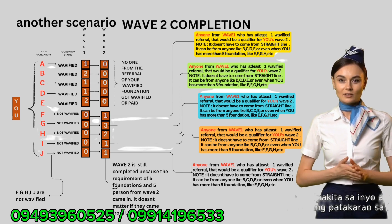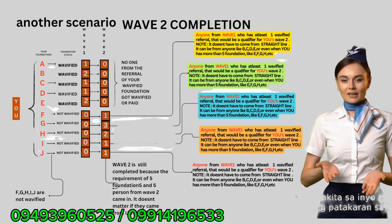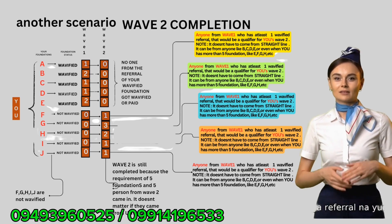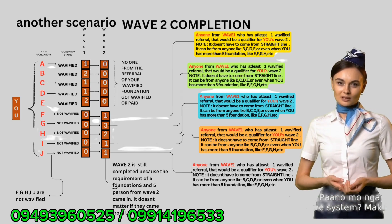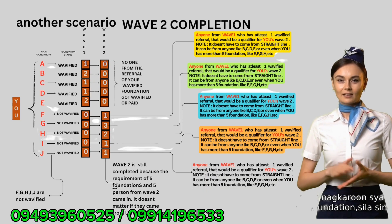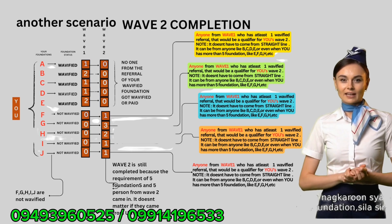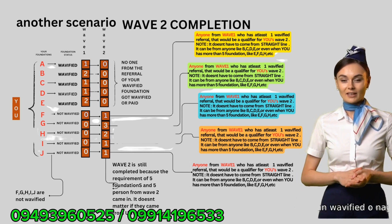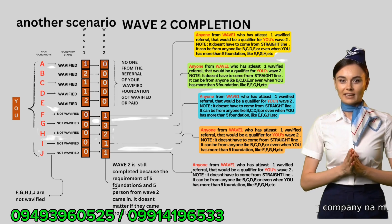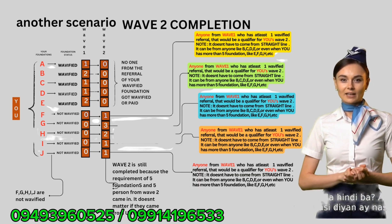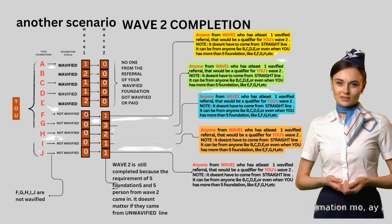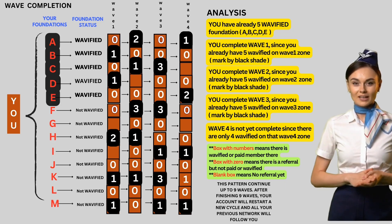Bago natin ipagpatuloy ang discussion tungkol sa wave three, gusto ko muna ipakita ang isa pang magandang patakaran sa nine waves. Sa larawan ay makikita na ang five foundations ay nagkaroon ng five referrals ngunit ang mga referral na yun ay natulog lang at hindi na kumilos. Nagkaroon siya ng pandagdag na foundation — sina FGHIJ — at sa kanila nagmula yung mga bumuo ng wave two. Si FGHIJ ay hindi naman waveified o nagpa-activate, pero allowed pa din ng company na mula doon makabuo ng wave. Ang importante lang ay nasunod ang basic rule na may five kang activated foundation.